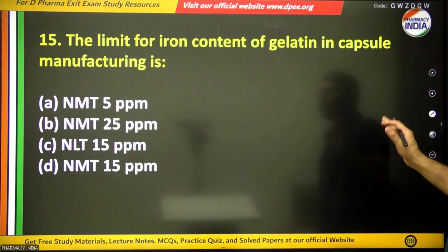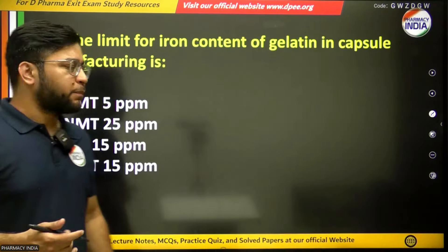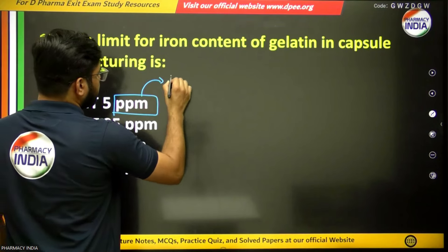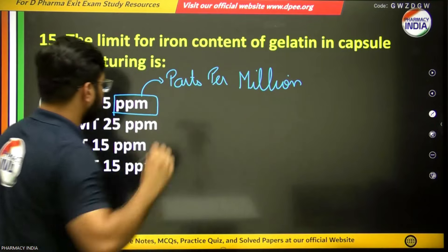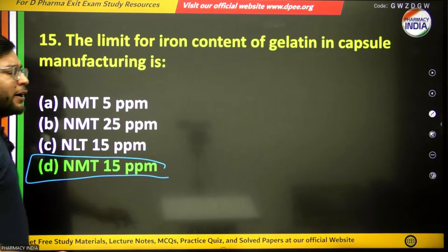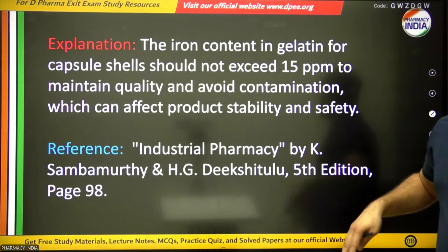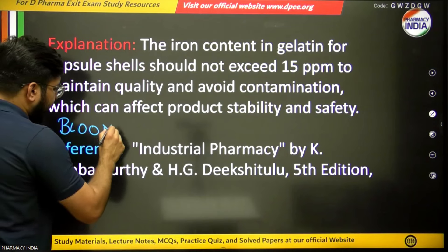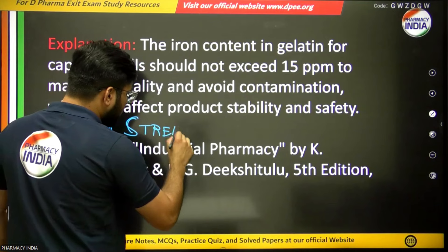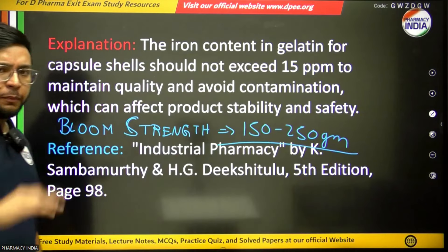The fifteenth question: what is the limit for iron content of gelatin in capsule manufacturing? The answer is not more than 15 parts per million (PPM). Also note: the ideal bloom strength of gelatin is 150 to 250 grams. These are important basic parameters for which questions are frequently asked.